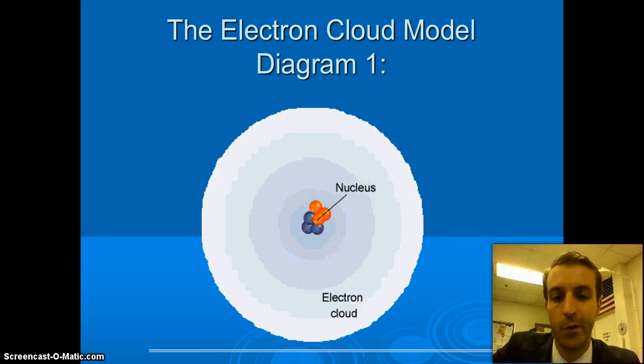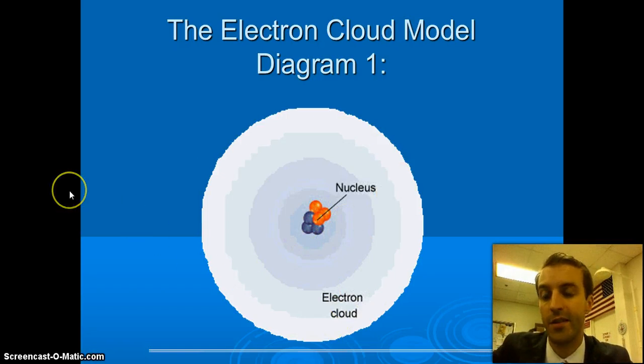Check it out. Here's a nice little picture of it. Nucleus right here in the middle, electron cloud round about the outside. But remember this is not drawn to scale. The nucleus is actually much smaller.